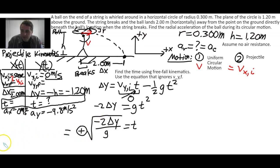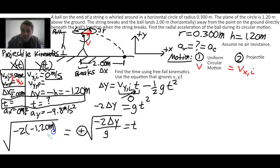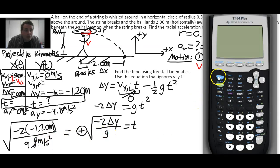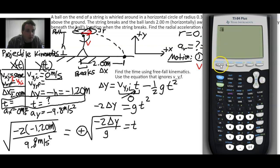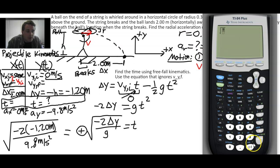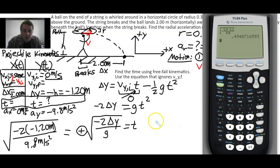Putting the numbers in: t = √(−2 × (−1.20 meters) / 9.8 meters per second squared). Going to the calculator — using the second square root and the fraction template — negative 2 times negative 1.2, divided by 9.8, take the square root, we get approximately 0.495 seconds. That seems reasonable.